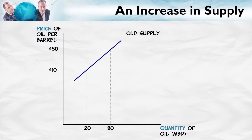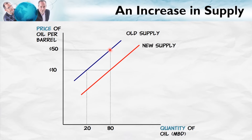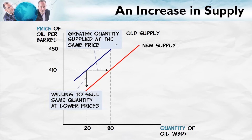As with demand curves, supply curves can also shift. Let's look at an increase in supply first. Which way is this curve going to shift? Keep in mind that quantity is on the horizontal axis, so an increase in quantity shifts the curve to the right and down. It means that at any given price, with the increased supply, suppliers are now willing to supply a greater quantity. At a price of $10, using the old supply curve, they were willing to sell 20 units; with the new supply curve, they're now willing to sell 80 units.